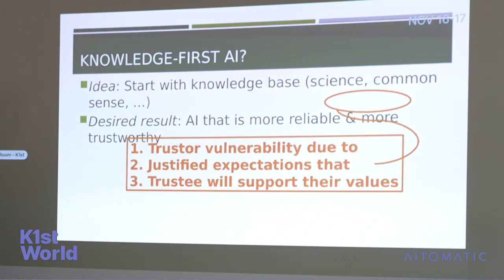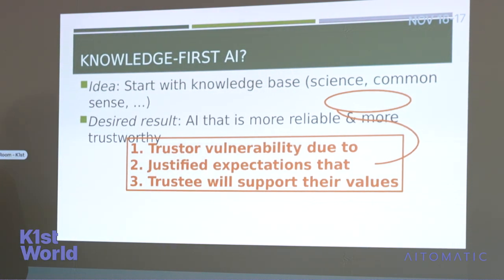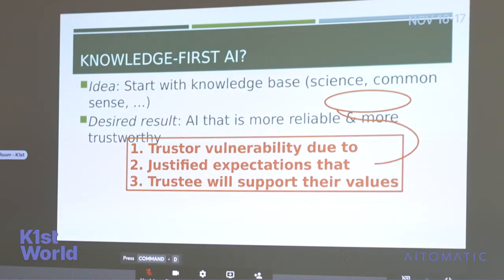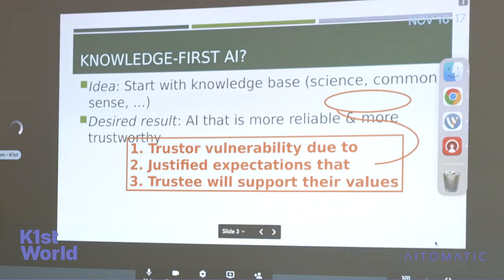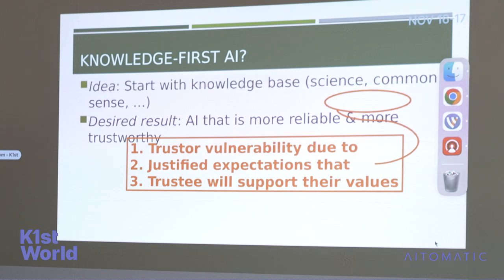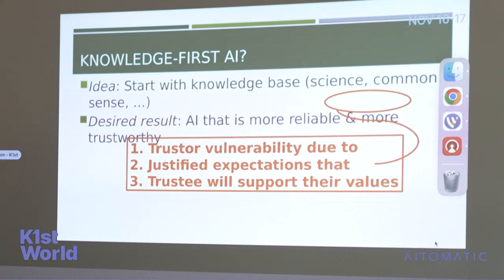When we think about this in the context of AI, it means that we, as developers, data scientists, and AI researchers, need to think about how our system is going to support the values of the trustors. We need to think about the vulnerability people are taking on and ask ourselves: do they actually have the right expectations about what our system is going to do? When you frame it like this, it's not hard to see why a knowledge-first or knowledge-centered approach might be really useful — because if I know I'm building a system that views the world through the lens of the people I'm asking to trust it, I'm more likely to put them in a position where they have justified expectations, and they're not going to be confused when they use Alexa or Siri.